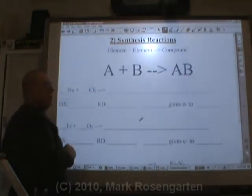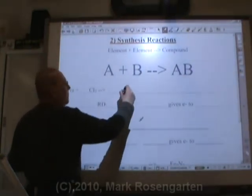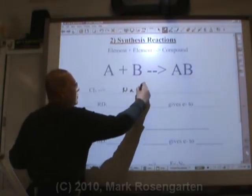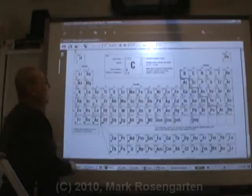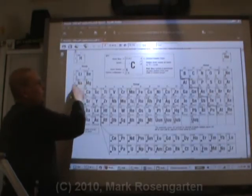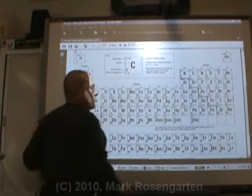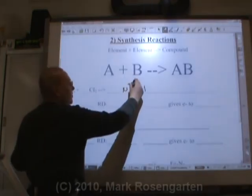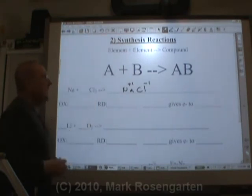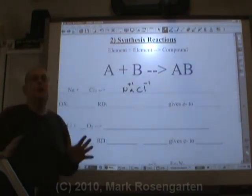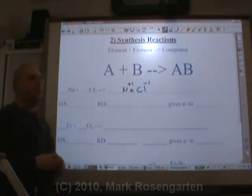When Na and Cl combine to form a compound, the compound will contain sodium and chlorine. According to the periodic table, sodium has an ion charge of plus one and chloride has an ion charge of minus one. Therefore, the formula of the compound they make is NaCl. That's a properly written formula.